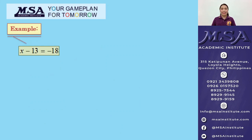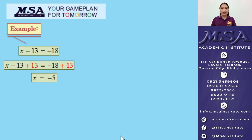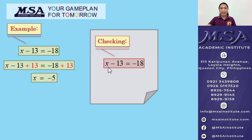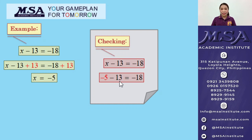Let's have more examples. X minus 13 is equal to negative 18. To find the value of X, we need to add the additive inverse of negative 13, which is positive 13. So, add positive 13 on both sides of the equation and simplify. Negative 18 plus 13 gives us negative 5. We can check our answer by substituting X with negative 5 in the original equation: negative 5 minus 13 equals negative 18. Yes, so our answer is correct.